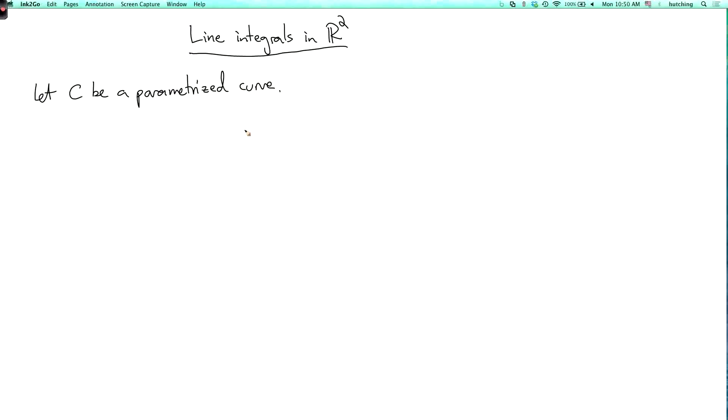So remember, what does that consist of? That means we have an interval, say from a to b, and a typical point in this interval we'll call t, and this is getting mapped by some function r to a curve in the xy-plane.